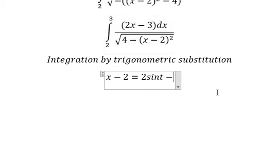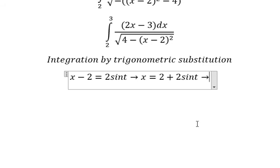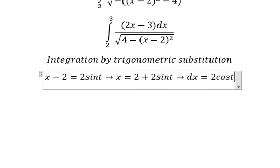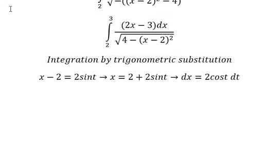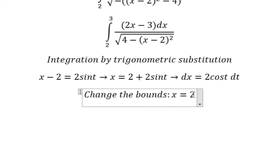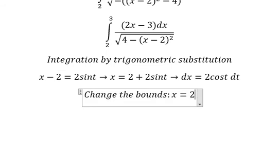Because we still have x, so we put negative number 2 to the right. Next we do first derivative for both sides, we have 2 cosine t dt. Next we change the bounds. When x equals number 2, we put number 2 in here: 2 minus 2, you got 0, so t should be equal to number 0.